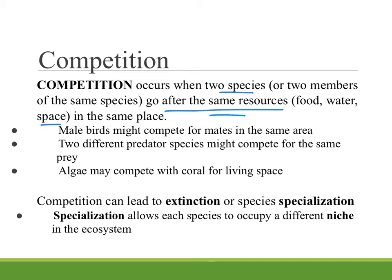For example, ground-nesting birds such as penguins have a certain amount of square-meter space around them that they need to build their nest. In our class activity, we talked about how corals need a certain amount of space and algae can crowd them out through competition.